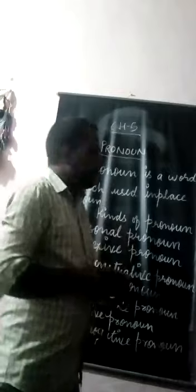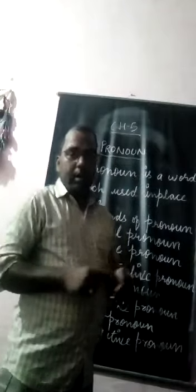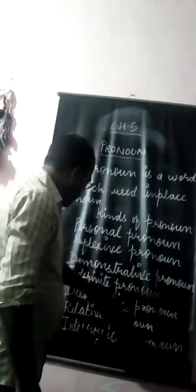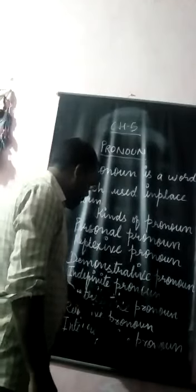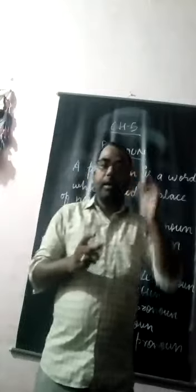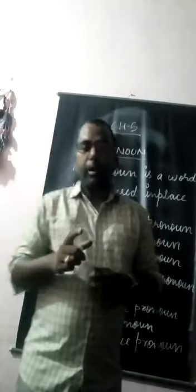I hope you will understand pronoun, which is used in place of noun. There are six to seven kinds of pronoun: first is personal pronoun, second is reflexive pronoun, third is demonstrative pronoun, fourth is indefinite pronoun, fifth is distributive pronoun, sixth is relative pronoun, and seventh is interrogative pronoun. I hope you understand. If you have any question or query, you can ask me — you can call me.